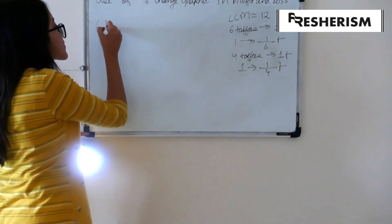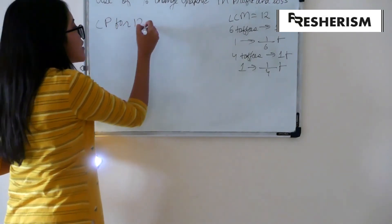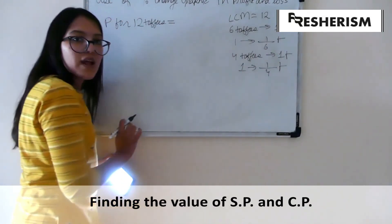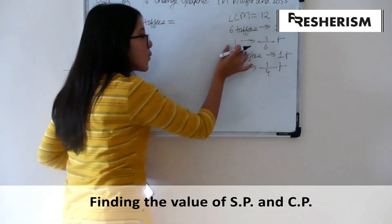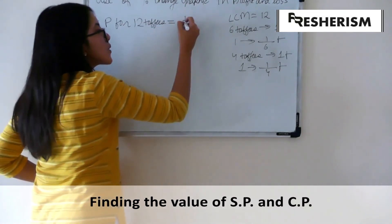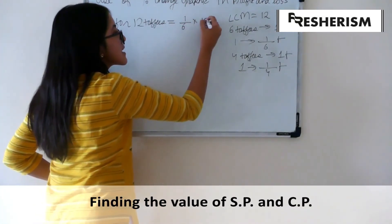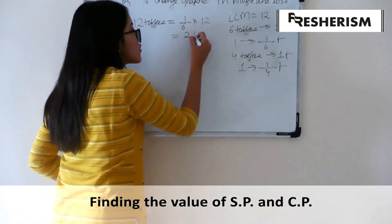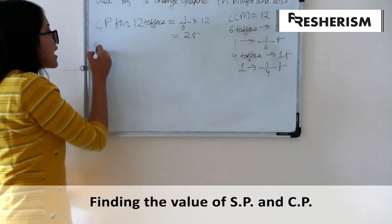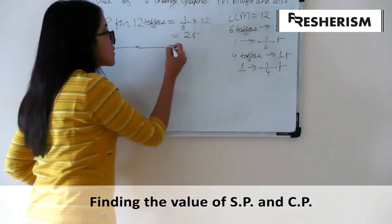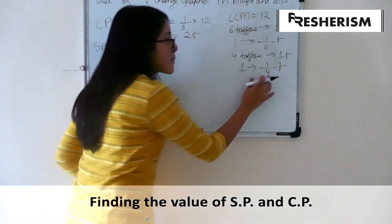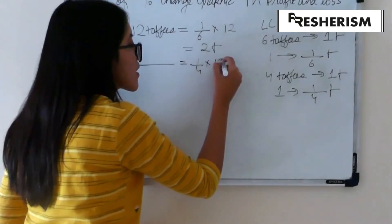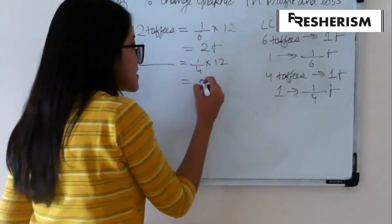The cost price for 12 toffees will be 1 by 6 into 12, because this was the cost price for 1 toffee. Therefore, for 12 toffees, it will be 1 by 6 into 12, which gives us 2 rupees. Similarly, our selling price for 12 toffees will be 1 by 4, which was the selling price for 1 toffee into 12, which gives us 3 rupees.